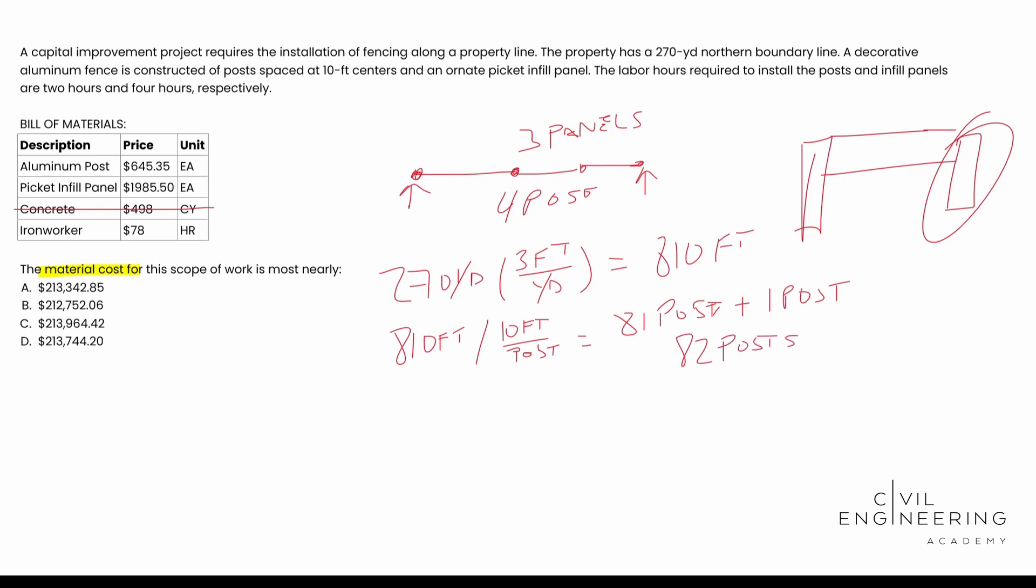So with that, we do understand that a panel is going to be split in between the posts. So that's going to be this guy. So we know there's going to be one less panel than there is posts because you're going to have just this one on the end, that post. So we're going to have 81 panels by using this. We can go ahead and do our multiplication to get our material cost.